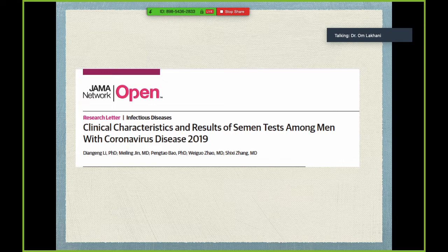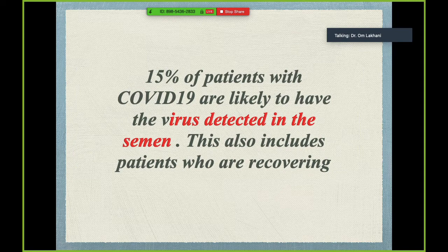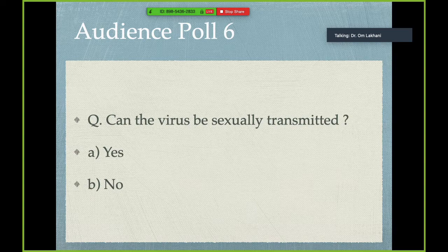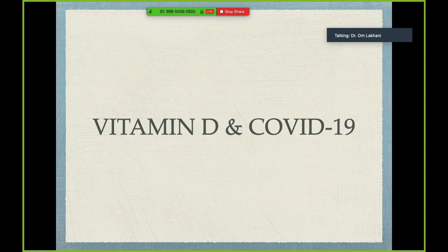A study from China analyzed semen samples from patients with active COVID-19 infection or recovering from it — 15% of COVID-19 patients were likely to have the virus detected in their semen, including patients who were recovering. This raises the question: does SARS-CoV-2 become a sexually transmitted virus? A patient who recovers and goes home — can he transmit the infection to his partner? These are questions that require further thought.